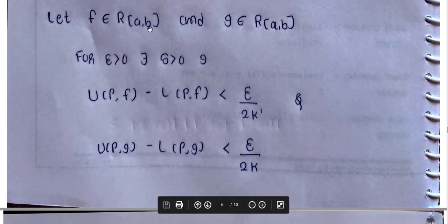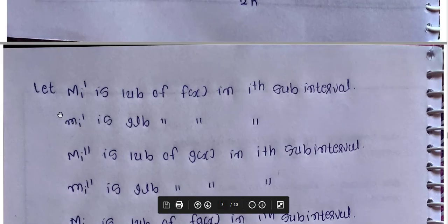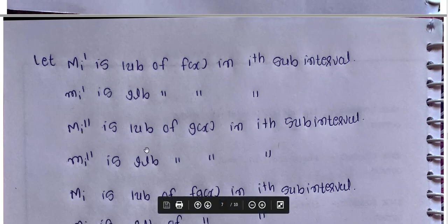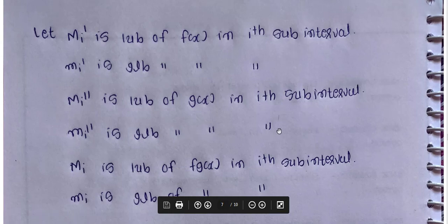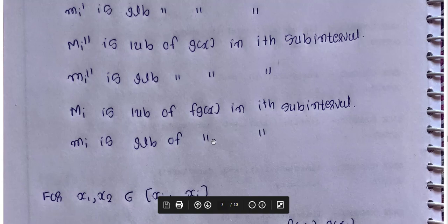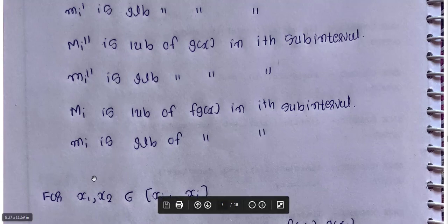This means f is Riemann integrable over closed interval. Let capital Mi' be the LUB of f of x in the i-th subinterval, small mi' be the GLB of f of x in the i-th subinterval, capital Mi'' be the LUB of g of x in the i-th subinterval, and capital Mi be the LUB of fg of x in the i-th subinterval, small mi be the GLB of fg of x in the i-th subinterval.